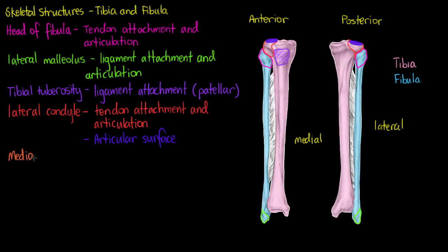We also have our medial condyle, which is very similar to the lateral condyle but doesn't extend out quite so far because it doesn't need the lower portion that will interact with our fibula. But it's also going to be quite a large articular surface and a point of tendon attachment and articulation.